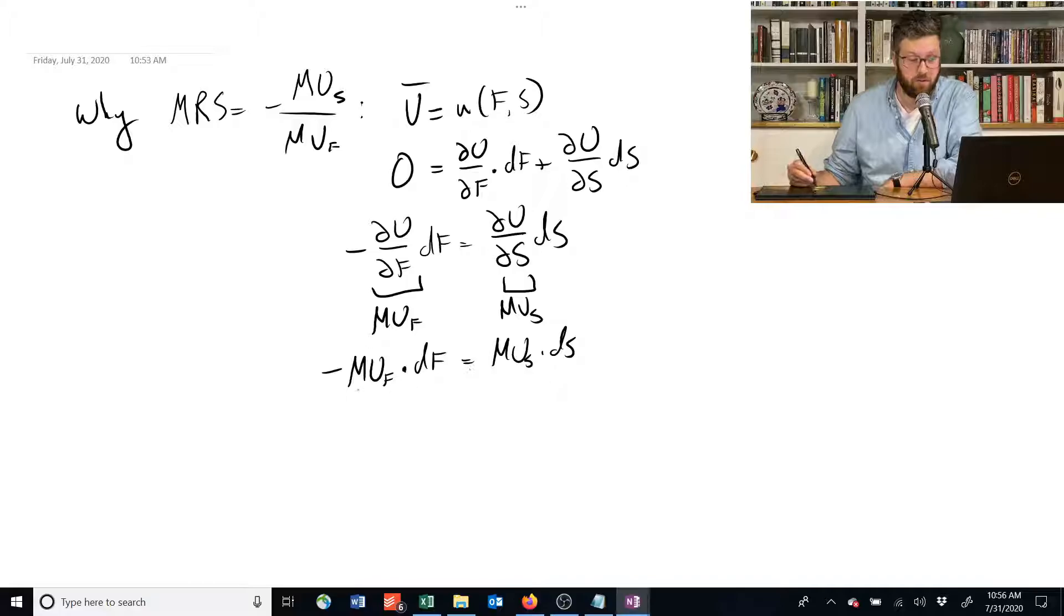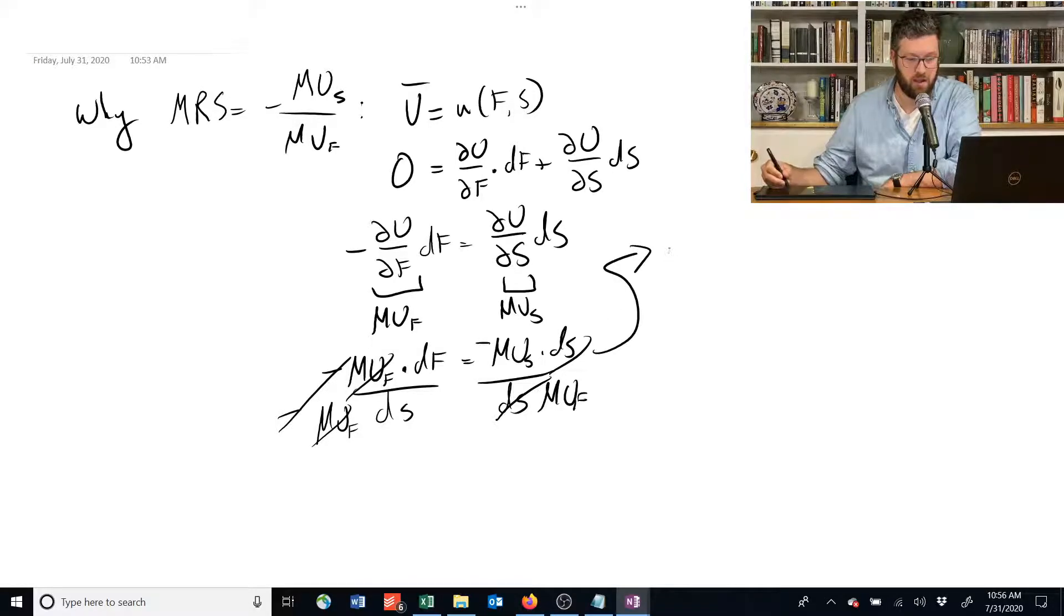And now we divide both sides by ds, divide both sides by MU_f, and we'll take the negative of each side too. These cancel, these cancel, these cancel.